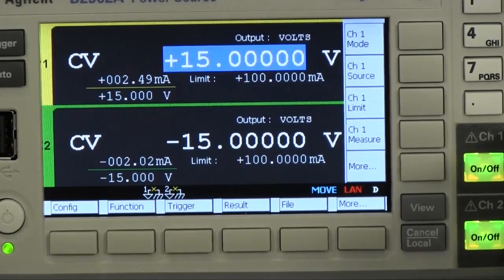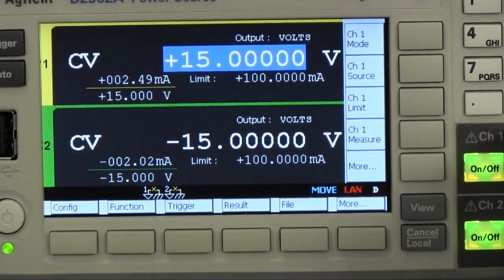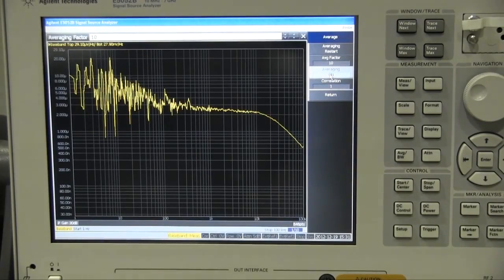You can check consumption current on the display of the power source. Graph display of spectrum analyzer seems very close to the estimation.